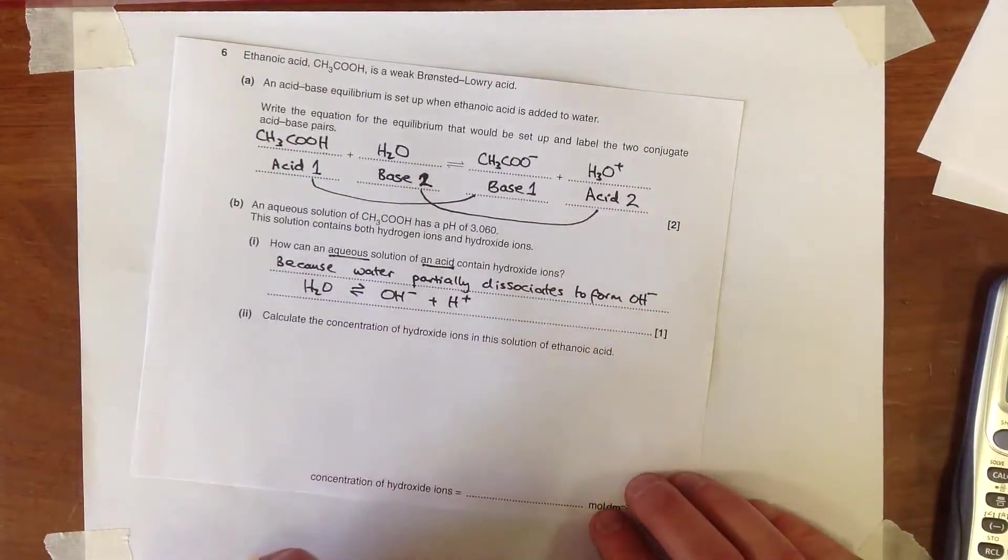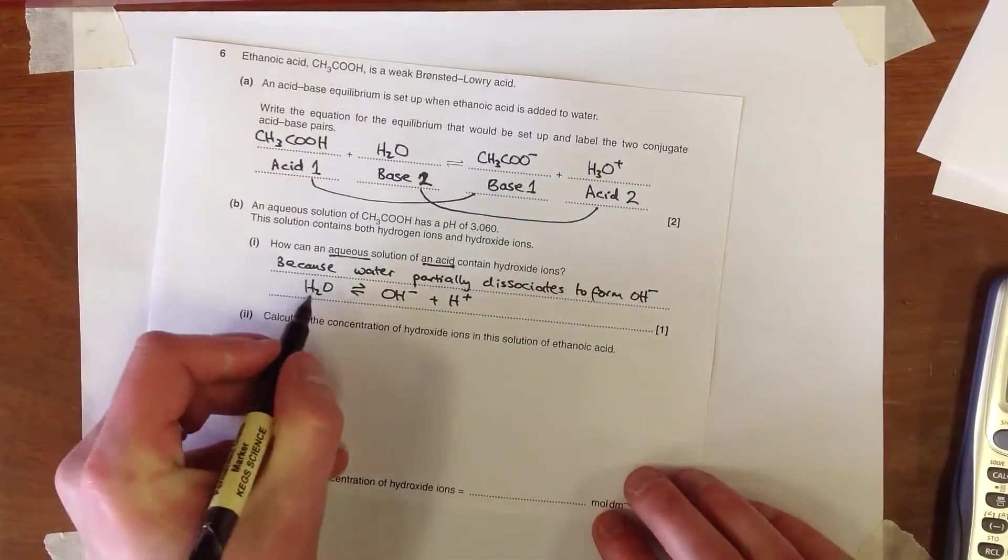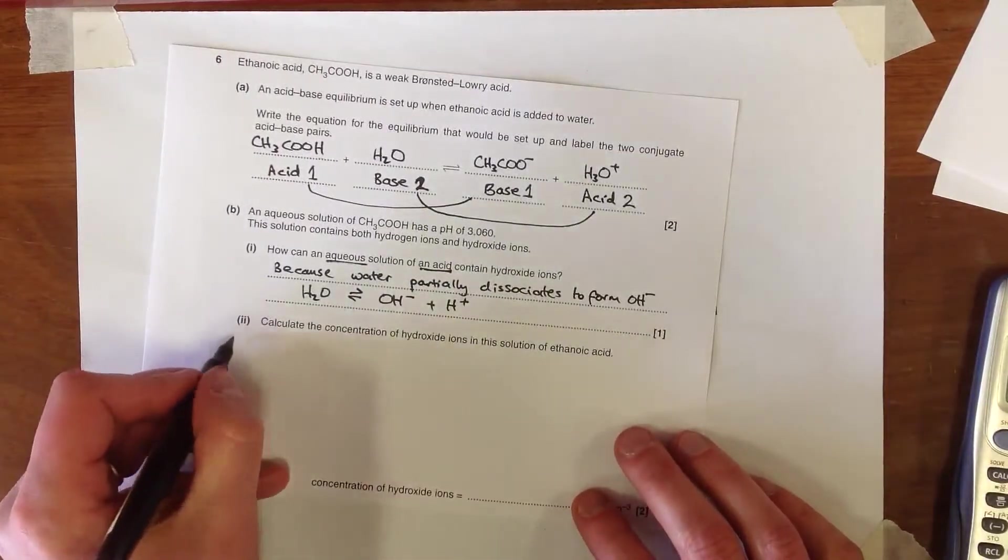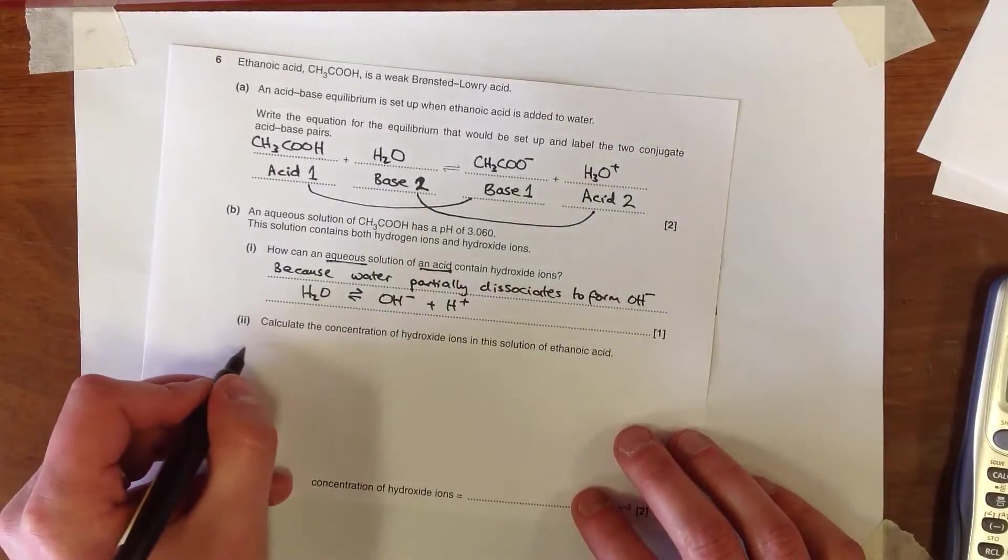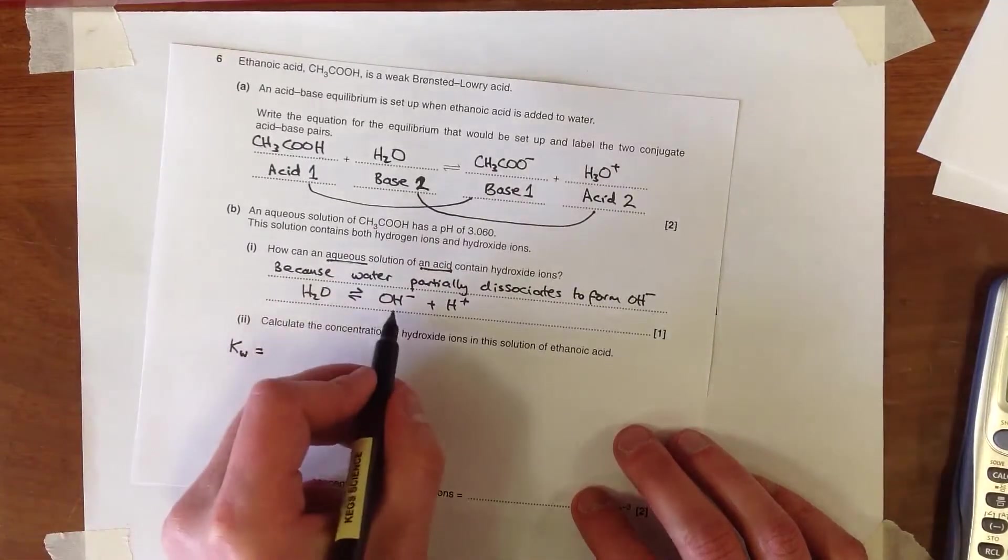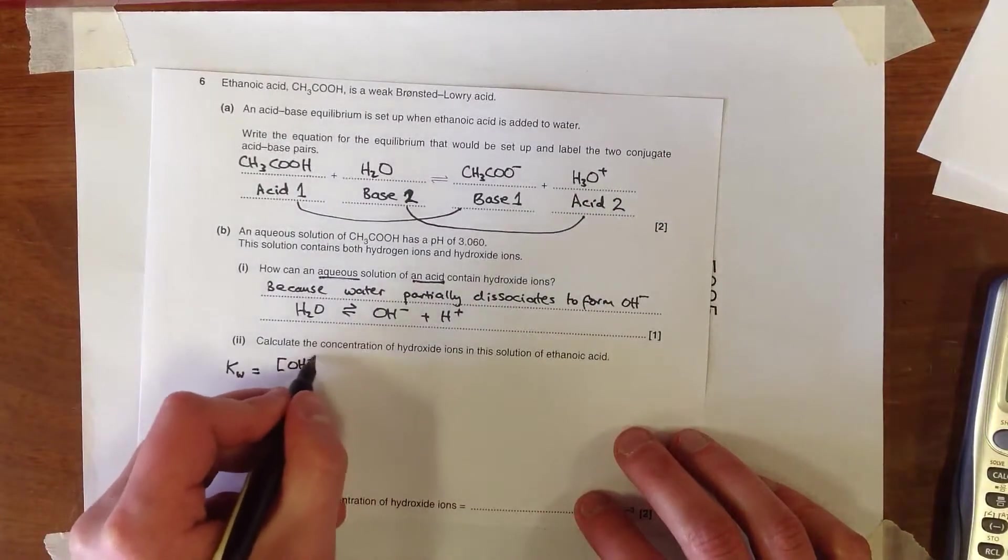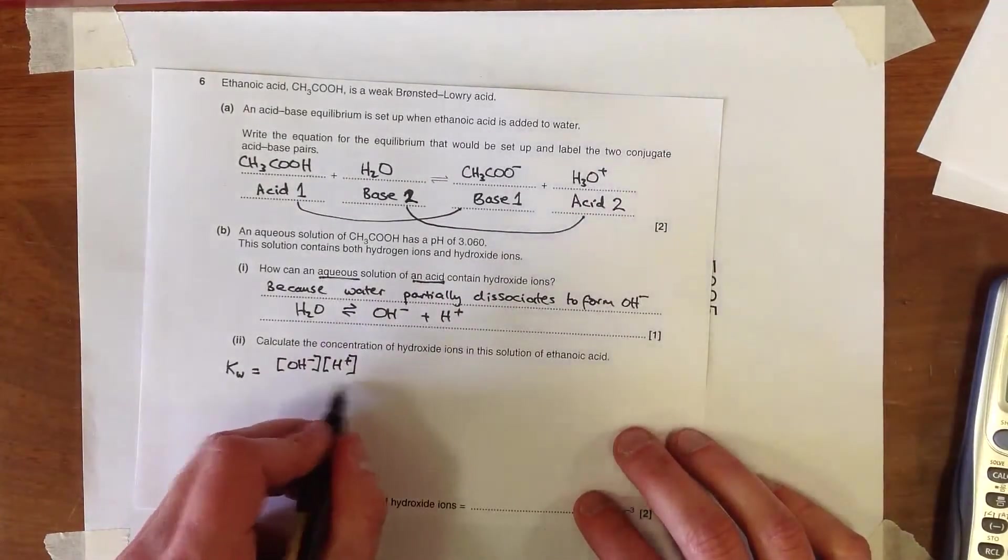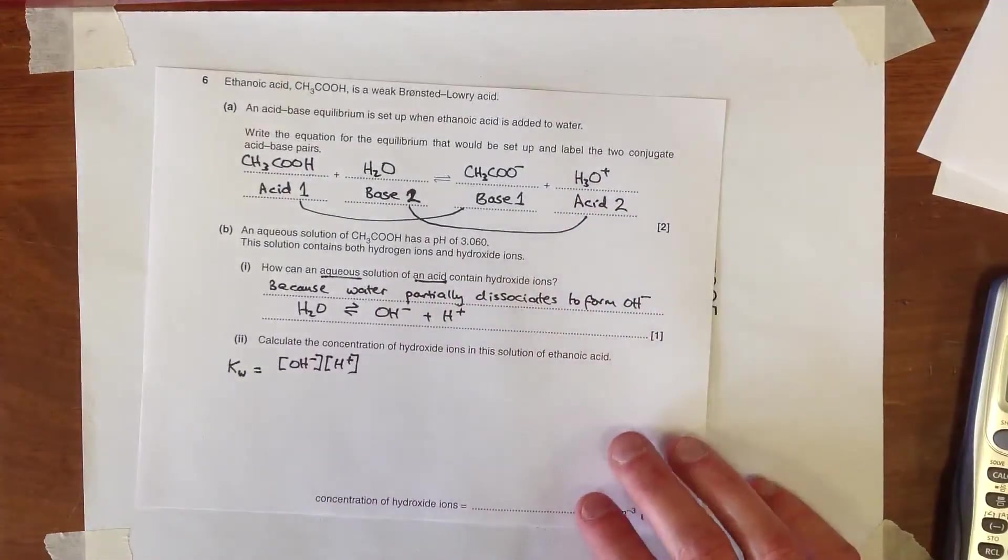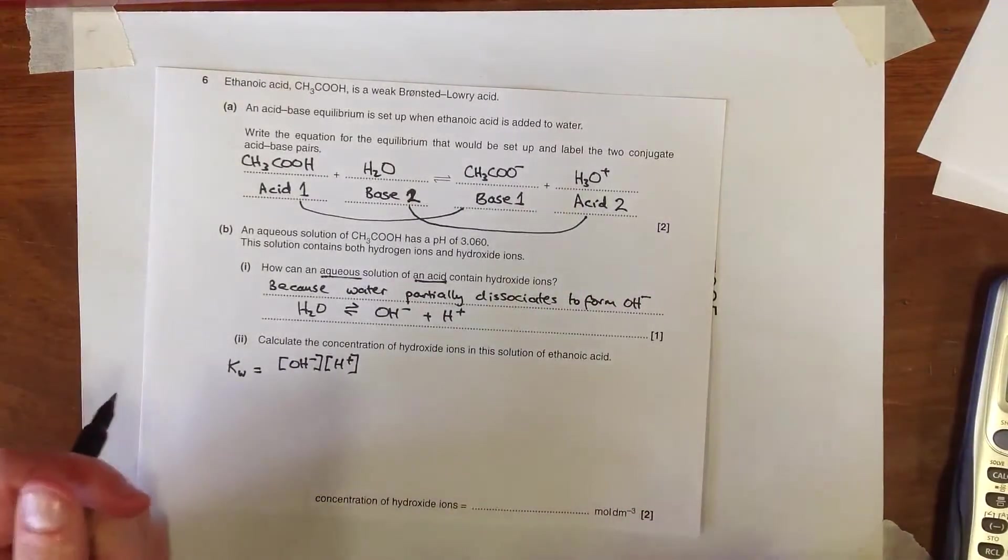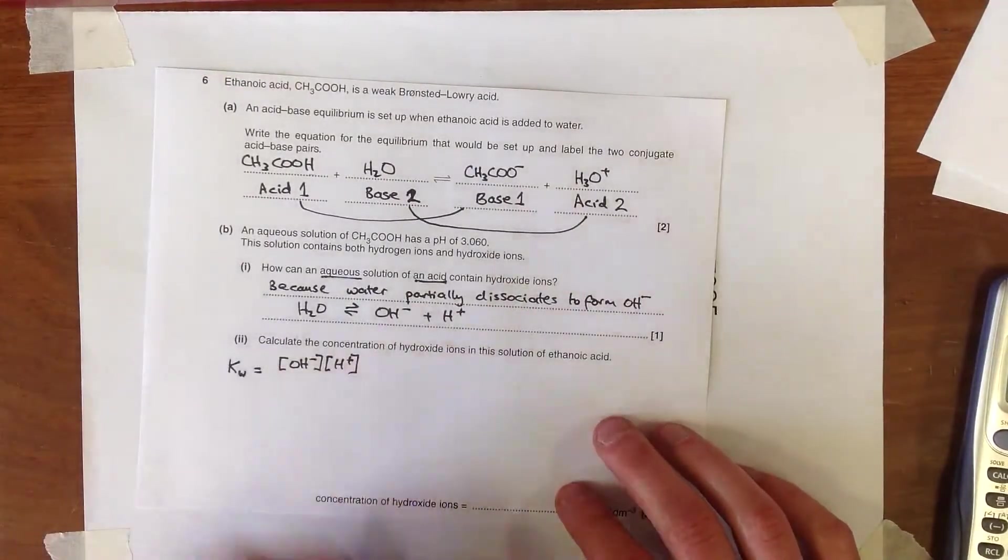When we calculate the concentration of hydroxide ions in this solution of ethanoic acid, we're essentially considering that water is acting as a weak acid in this case. And so we can write a dissociation constant for the acid, which is known as the ionic product of water, which is essentially, if we look back at this equation, going to be the concentration of OH- times the concentration of H+. Now this should be divided by the concentration of H2O. But because water is present in such a vast concentration, we actually tend to ignore its effect.